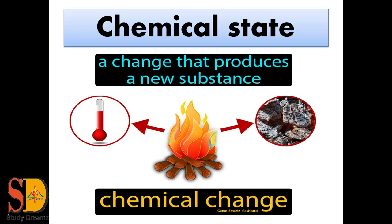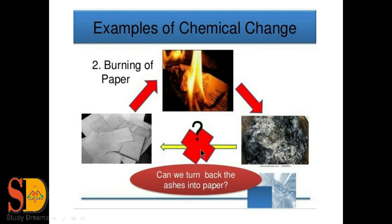Next is chemical change. A change that produces a new substance whose property is completely changed from the old one — this is a chemical change. Like when we burn wood, it changes into ash. The property of ash is completely different from the property of wood. So this is a chemical change in which we get a new substance from the old one. Second example: burning of paper. This is a piece of paper, and when we burn it, we get black ash. The property of the ash and the property of the paper are completely different, and we get a new substance. So this is again a chemical change.